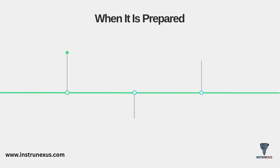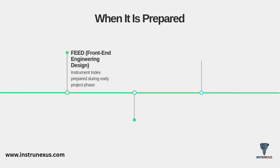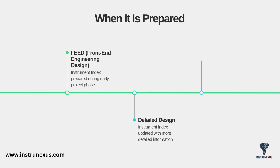The Instrument Index isn't a document you create just once — it's a living document that evolves as the project matures. It begins during the FEED stage, or front-end engineering design. A preliminary version is prepared during this early project phase, often with just the tag numbers and key service descriptions. As the project moves into detailed design, the index is continuously updated with more and more detailed information, adding data from process, vendor lists, and electrical. Finally, once all designs are firm and all data is in, the Instrument Index is finalized and becomes part of the IFC, or Issued for Construction, package — the official approved document for procurement and construction teams.